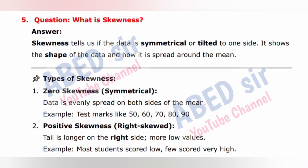Next important short question: What is skewness? Answer: Skewness tells us if the data is symmetrical or tilted to one side. It shows the shape of the data and how it is spread around the mean. Types of skewness: 1. Zero skewness — symmetrical. Data is evenly spread on both sides of the mean. Example: test marks like 50, 60, 70, 80, 90.